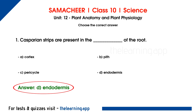In the Dicot root internal structure, endodermis has Casparian strips. It is an inner wall. In the endodermis, it is an inner wall — it is the Casparian strips.